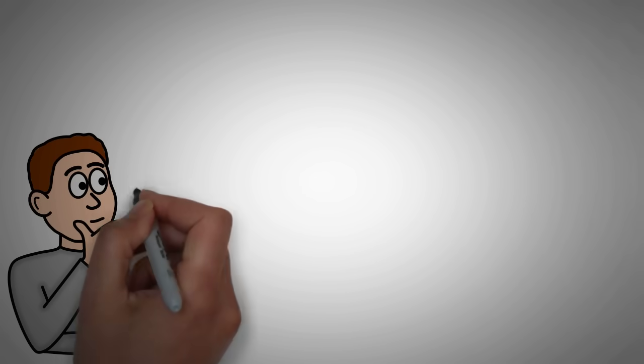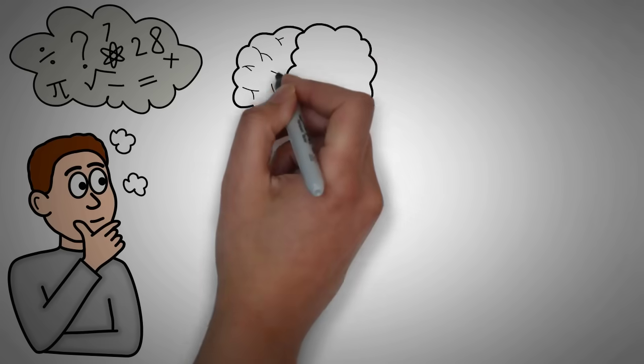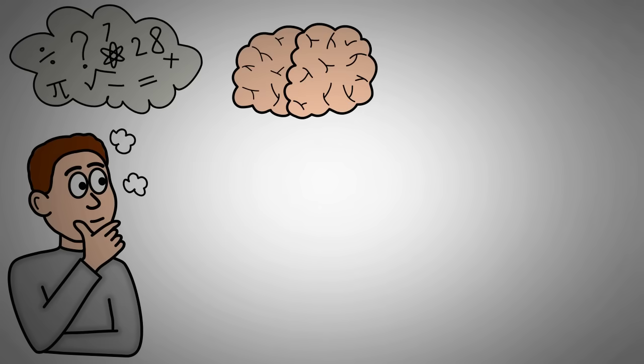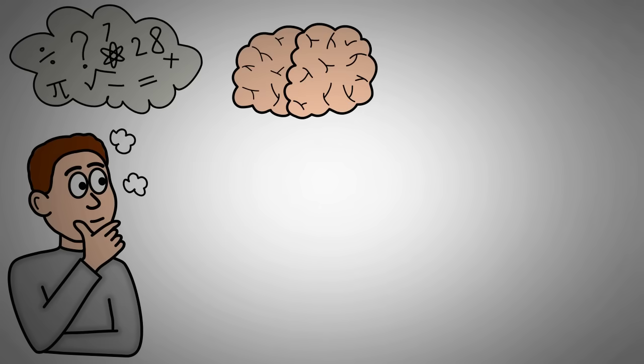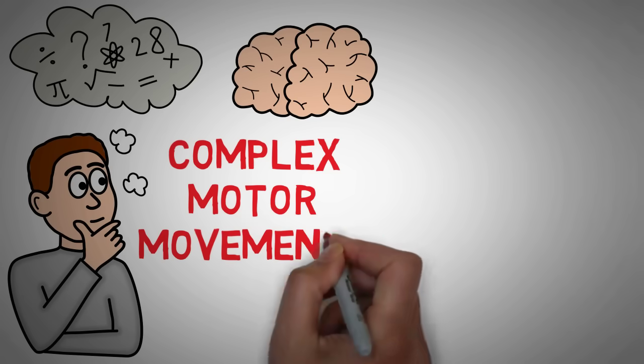Now you might be thinking, why would our brains shrink if we don't move as much? What we really need to ask ourselves is why do we need a brain at all? You might say that we have brains to come up with ideas or to analyze different situations. But the answer is that only a mobile creature needs a brain. The brain's main purpose is to perform complex motor movements.